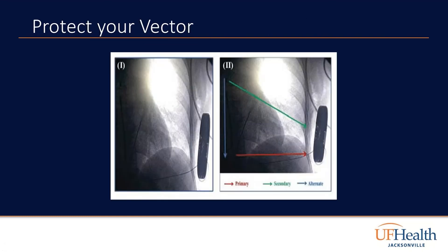What we are able to do — and we call this 'Protect Your Vector' — is to anchor the device itself with the extracellular matrix, which first stabilizes the device to the wall, and second stabilizes that vector, enabling the device to effectively defibrillate the patient around the center of mass of the left ventricle, preserving the primary and secondary vectors and sensing.